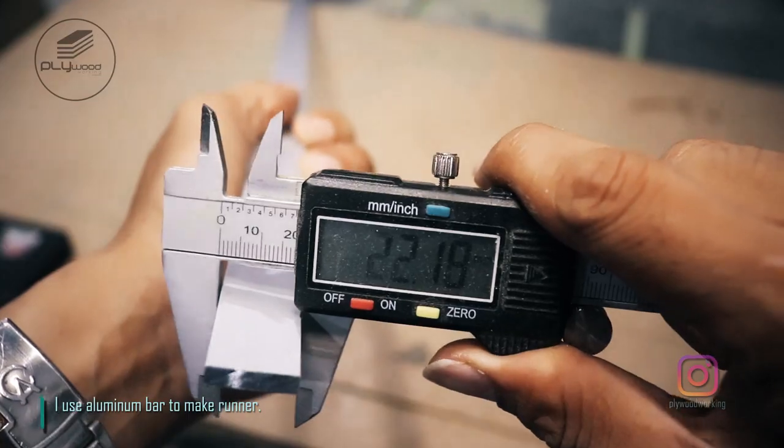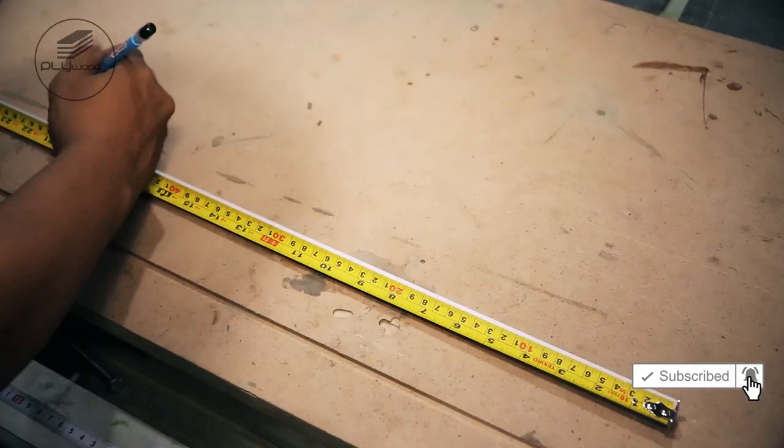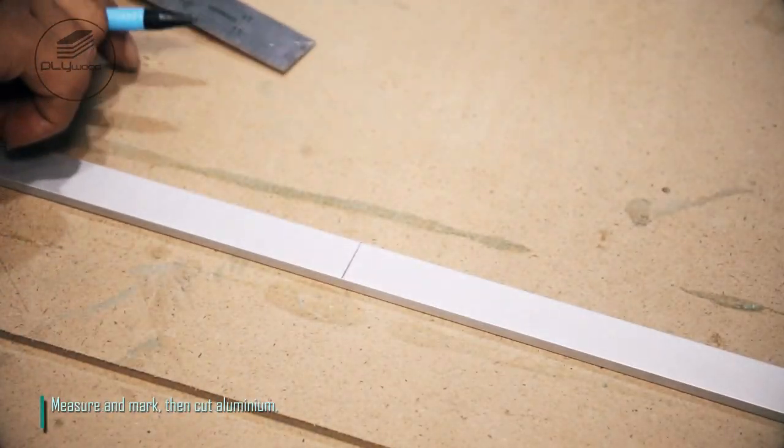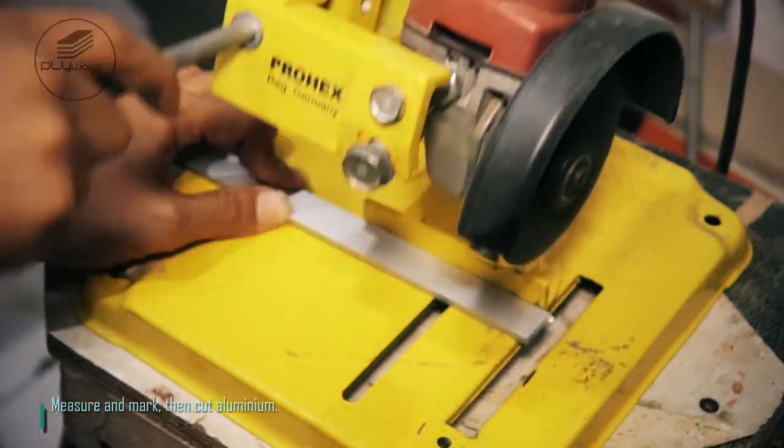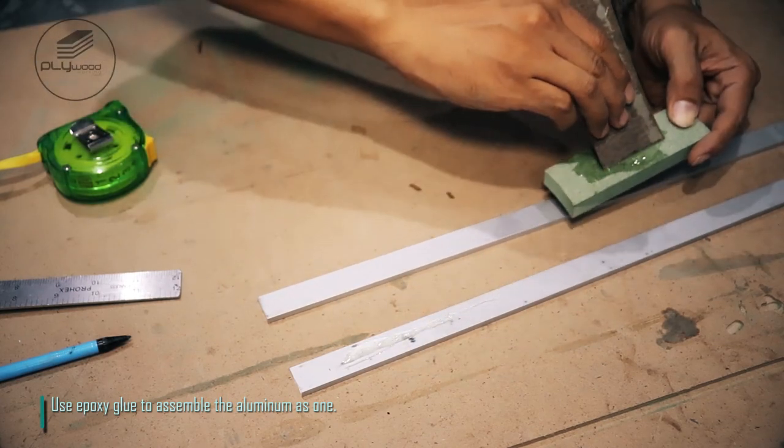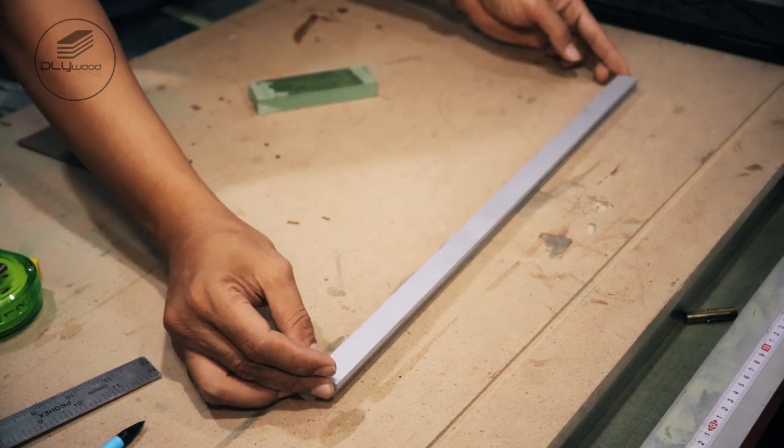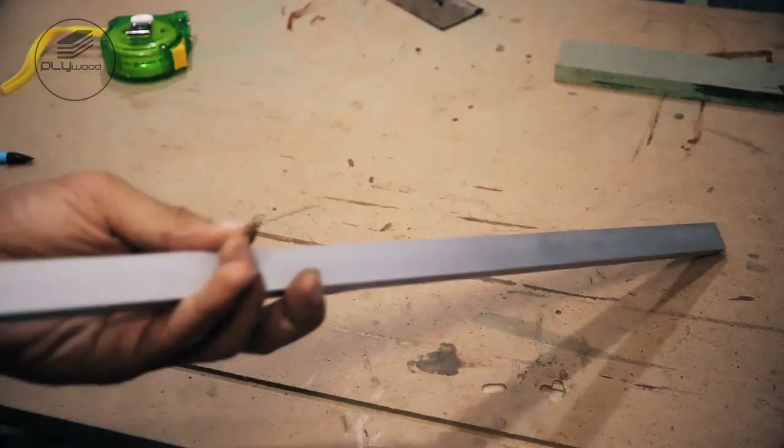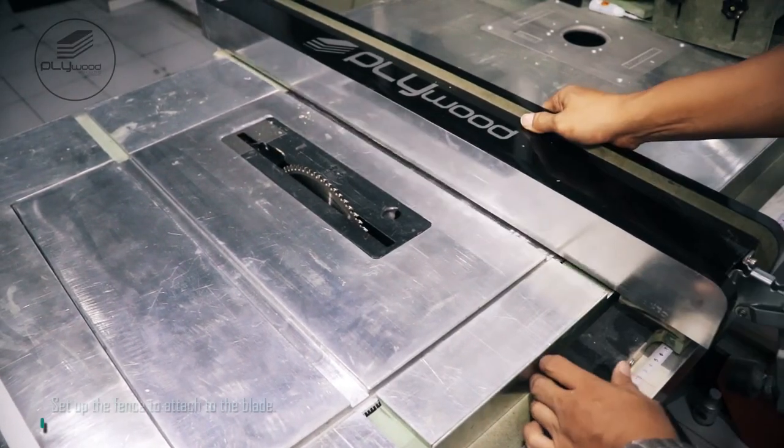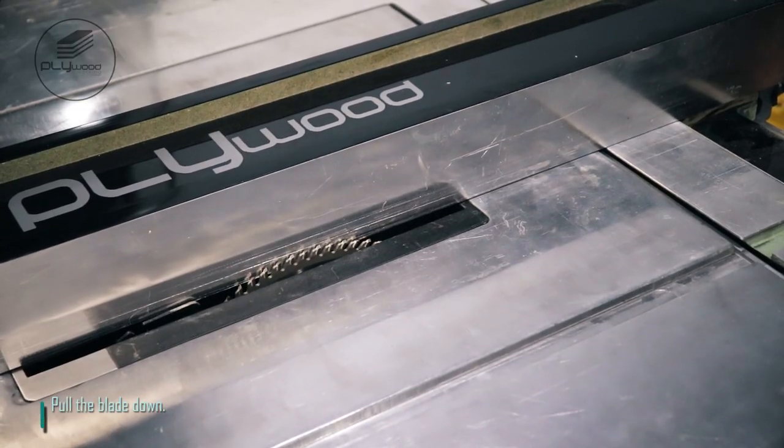I use aluminum bar to make runner. Measure and mark, then cut aluminum. Use epoxy glue to assemble the aluminum as one. Set up the fence to attach to the blade. Pull the blade down.